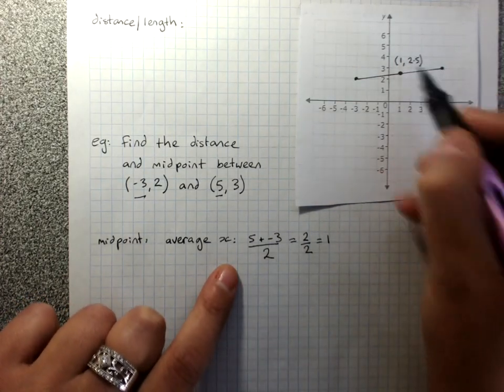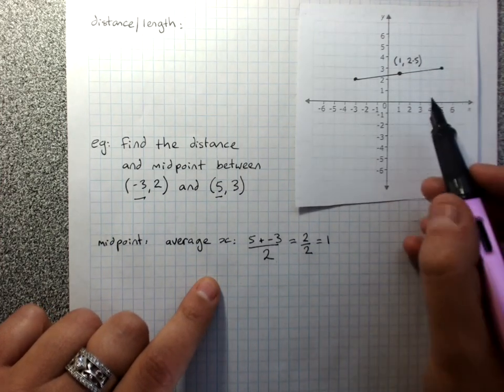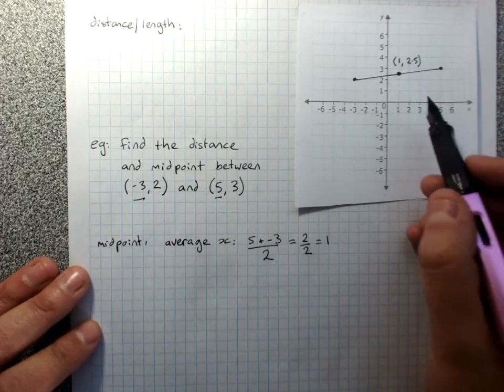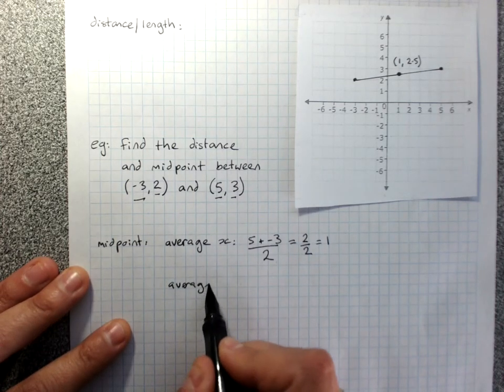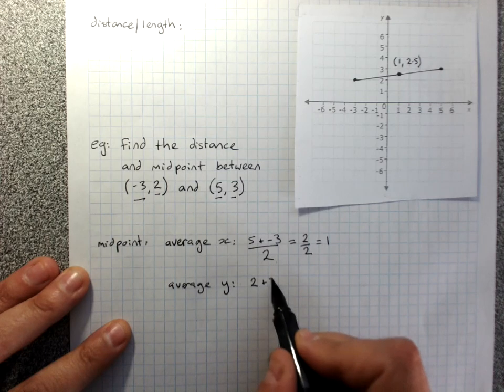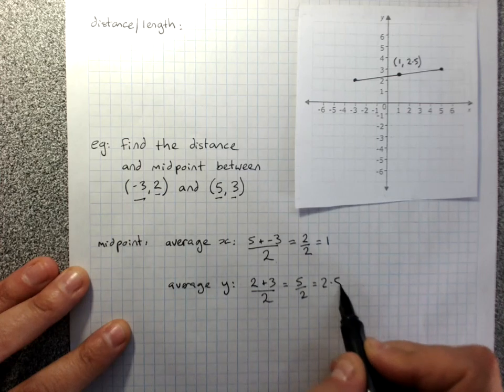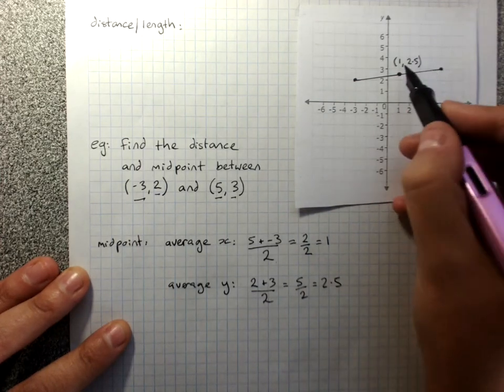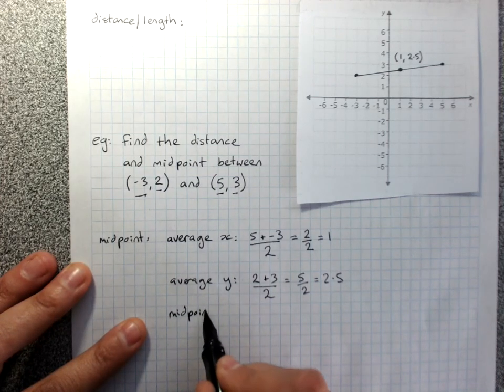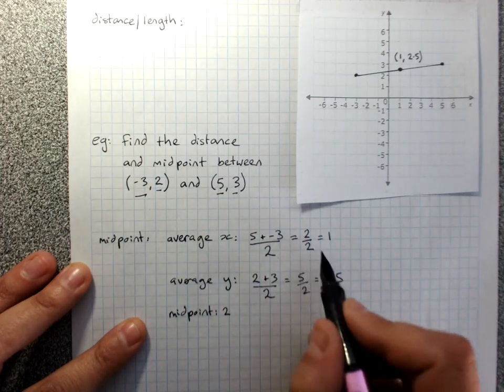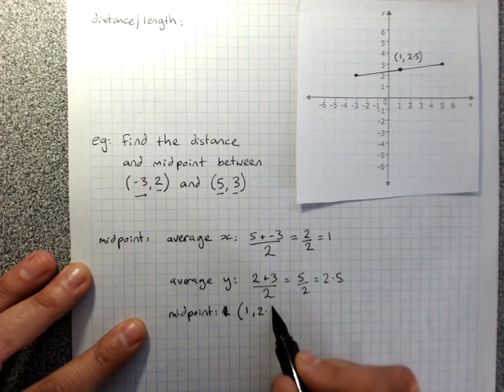I got the correct coordinate for the x's. To get the y coordinate, I need to average the y's. So I've got y is 2 and y is 3. 2 plus 3, and I've got to divide it by 2. That's 5 divided by 2, which is 2.5. I got the correct y coordinate. So the midpoint is, in brackets, the x, 1 and the y, 2.5.